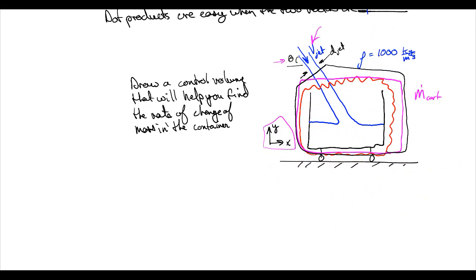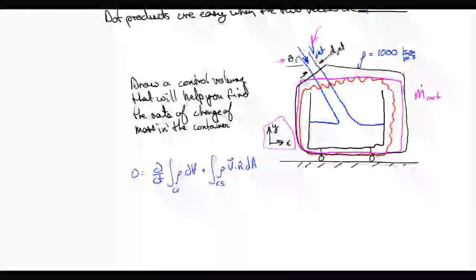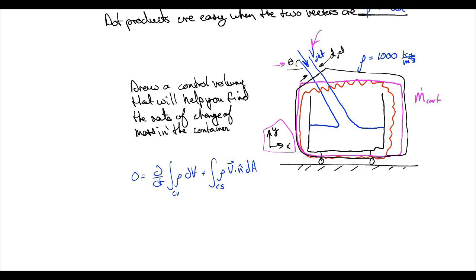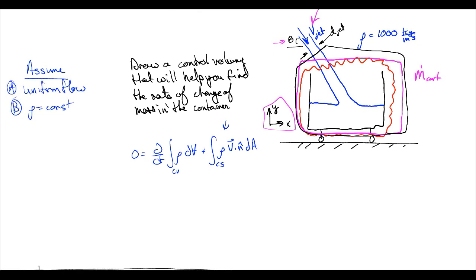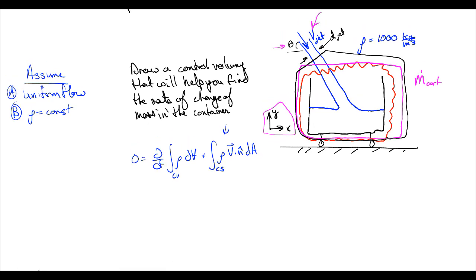So if we write out the conservation of mass formula: 0 is equal to d/dt of the integral of rho over our control volume dV, plus the integral over the control surface of rho times V dot n-hat dA. Here is where assumptions become crucial. We're going to assume uniform flow (a), and (b) we're going to assume density is equal to a constant. If density is constant, it can be taken outside the integral, and if flow is uniform, velocity is also constant and can be taken out of the integral.